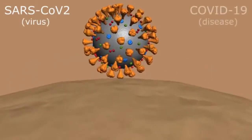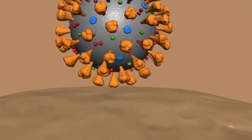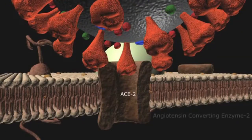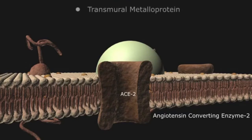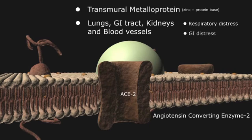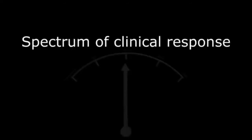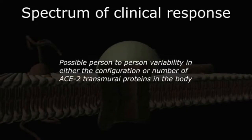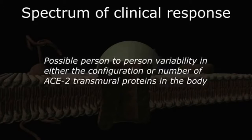The virus responsible for COVID seeks out a specific surface protein called ACE2 — angiotensin-converting enzyme 2 — a transmembrane zinc metalloprotein found in the lungs, GI tract, kidneys, and blood vessels. Their distribution explains some presenting symptoms of COVID, including respiratory and GI distress, renal failure, and dementia. However, the clinical response spectrum to SARS-CoV-2 is quite broad, ranging from completely asymptomatic to death, suggesting variability in either the configuration or number of ACE2 targets from individual to individual.